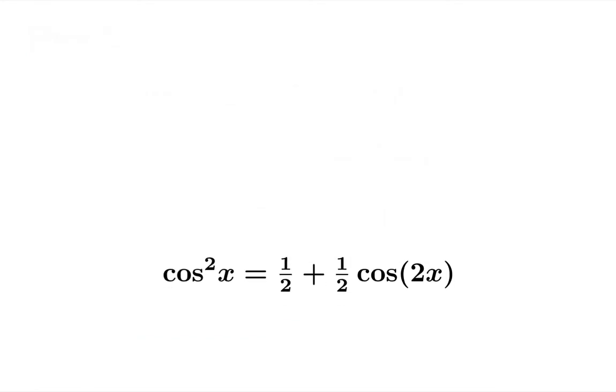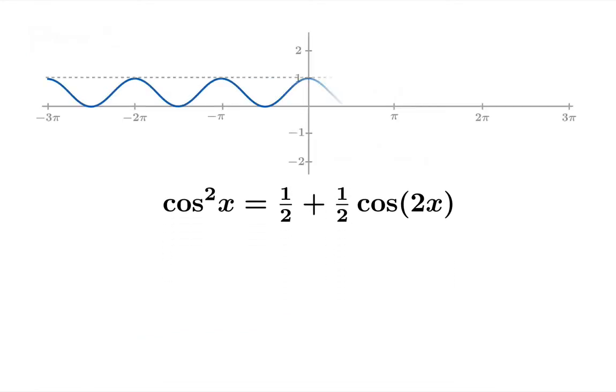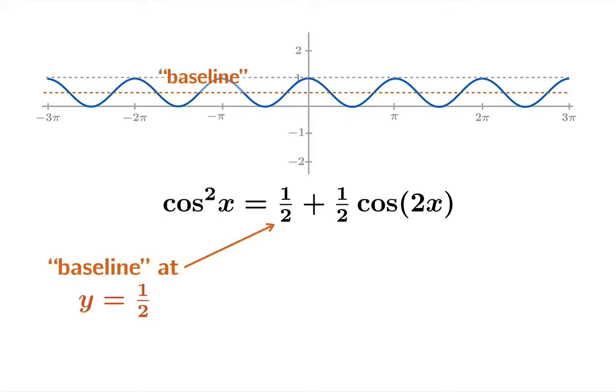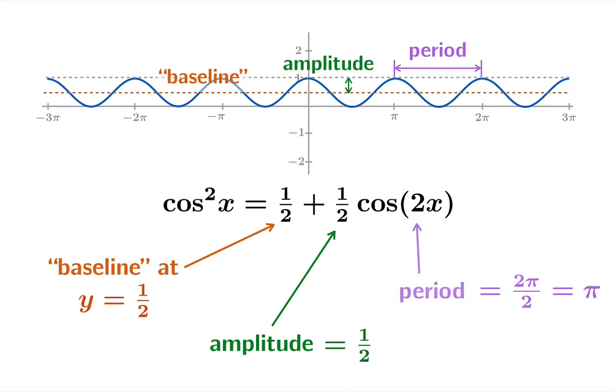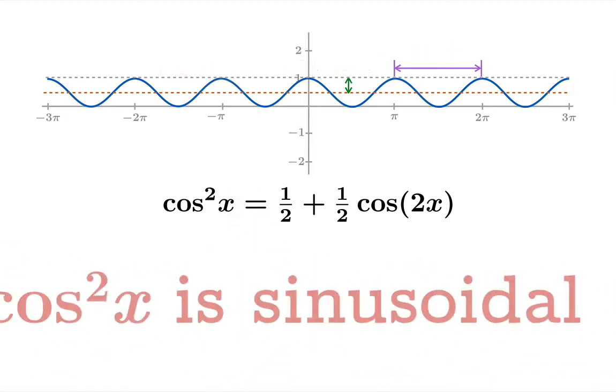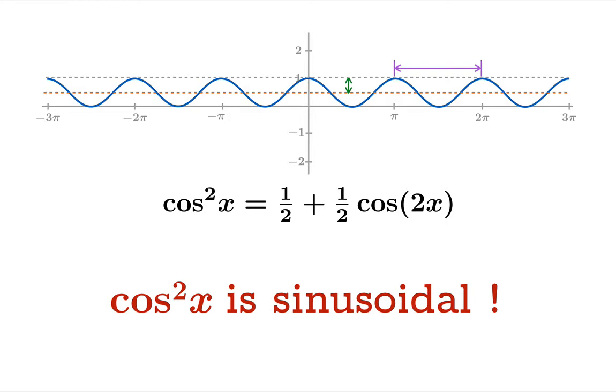What's intriguing about this is it is, in fact, a sinusoidal function. We've taken the graph of cosine and stretched it and shifted it. So the baseline of this function is at the line y = 1/2. The amplitude is 1/2. And the period is π. So cos²(x) is, in fact, sinusoidal, and it has these characteristics.